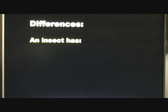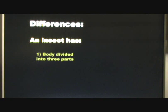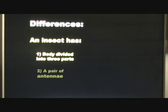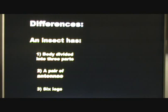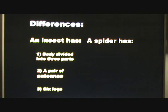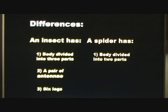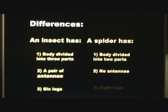An insect — or what's known as an arthropod — has a body divided into three parts, a pair of antennae, and three pairs of legs, or six legs total. A spider has a body divided into two parts, no antennae, and four pairs of legs, or eight legs total.